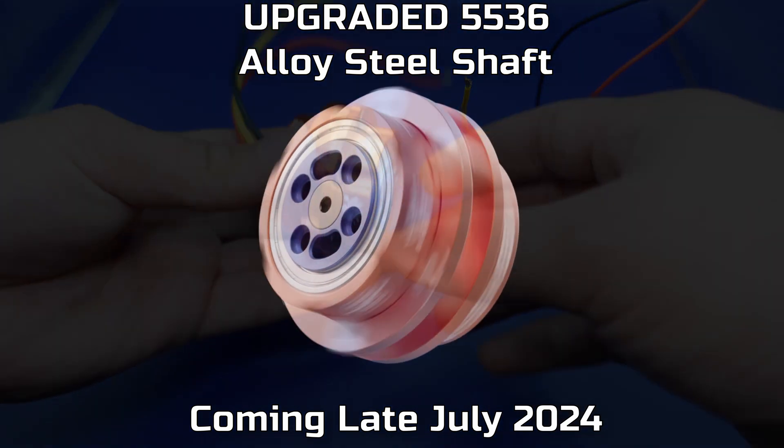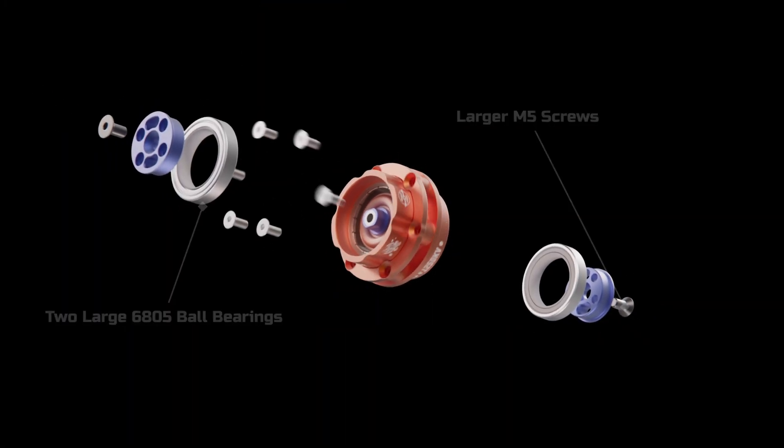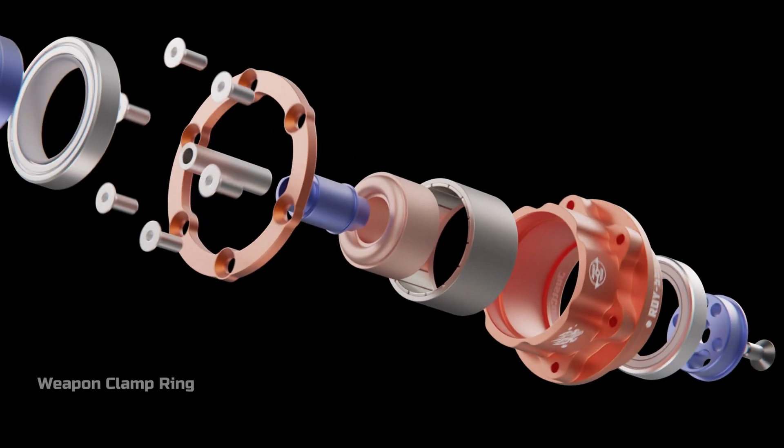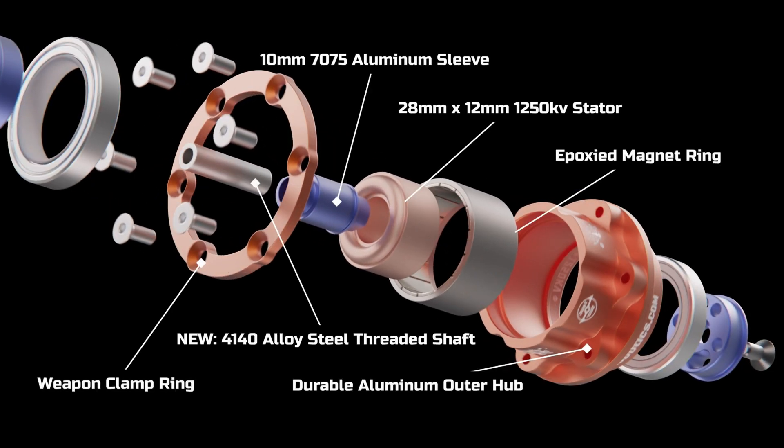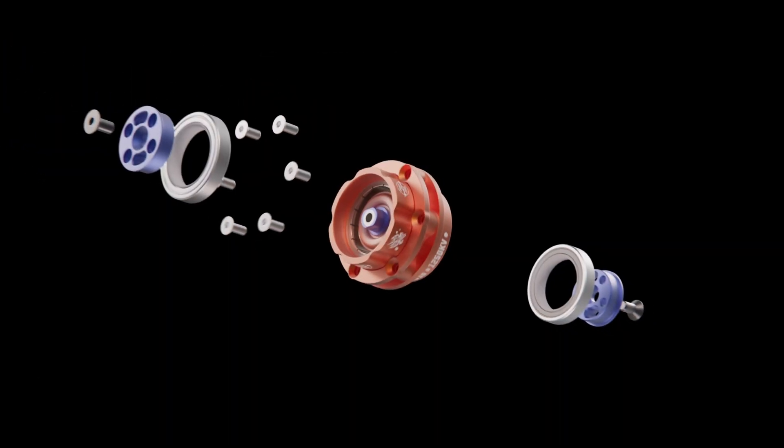The way the Beetleweight one is constructed, this blue part and this blue part are 100% identical. And the outer hub consists of this huge orange part and then just this thin clamp ring. Instead, the Antweight version is clamshell design. So this blue part and this blue part are actually very different.